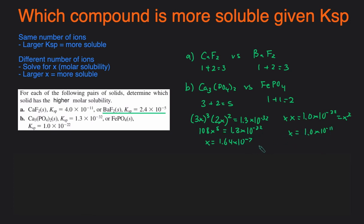So each of these X's are the molar solubility - that's how many moles would dissolve per liter. And then we just compare the X's and see which one's larger. So 10 to the negative 7 is larger than 10 to the negative 11. That means that calcium phosphate is going to be more soluble than iron phosphate.